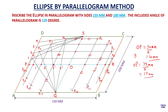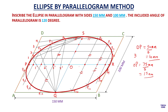These points can be joined freehand to draw the ellipse in the parallelogram. This is just a profile for your ellipse passing through all these points drawn freehand. If you have any query you can comment in the comment section. Thanks for watching, be happy.